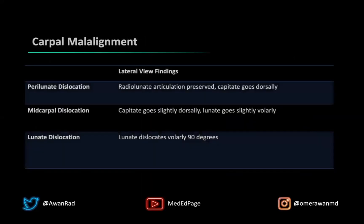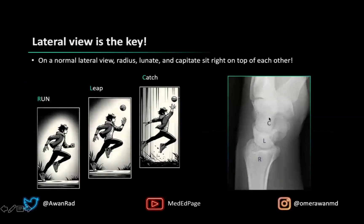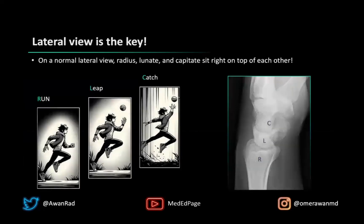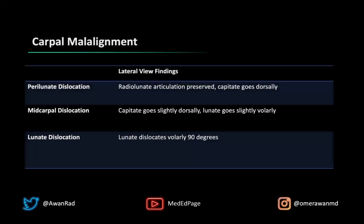In a perilunate dislocation, the radius and the lunate articulate normally, but the capitate goes dorsally. In a mid-carpal dislocation, the capitate goes slightly dorsally and the lunate goes slightly volarly — somewhere between a perilunate and a lunate dislocation. In a frank lunate dislocation, the lunate goes volarly or anteriorly by 90 degrees, as we saw in our index case. The lateral view was the most telling, answering the question — they all look very similar on the frontal view.